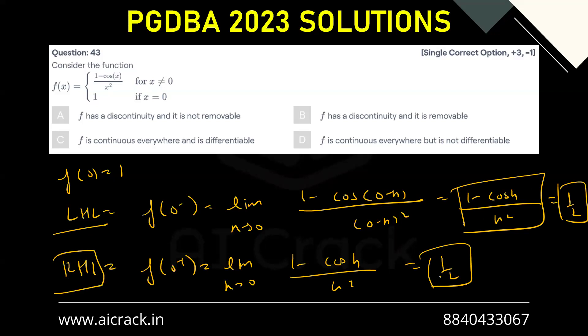Both are equal to 1/2, but they are not equal to f(0). So we have a removable discontinuity. F has a discontinuity but it is removable, so B is the correct answer.